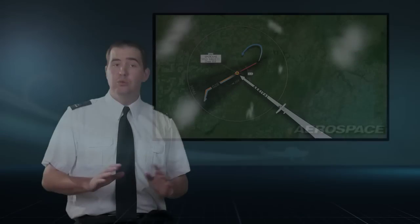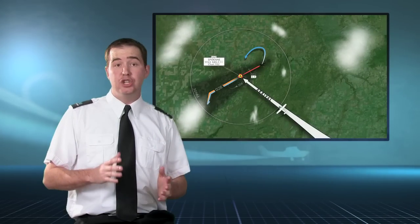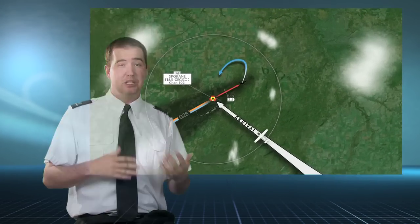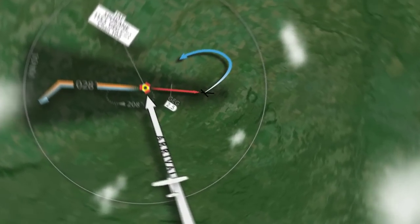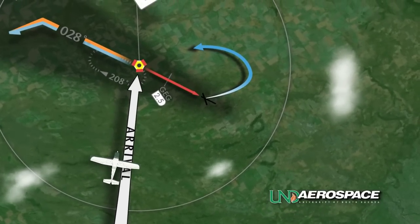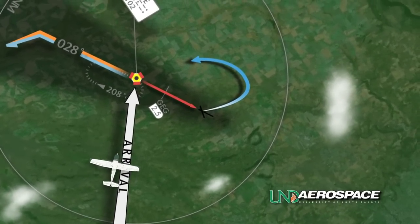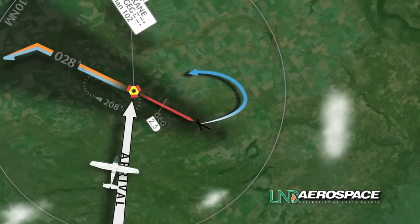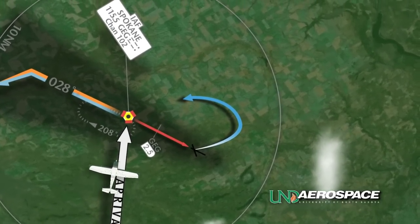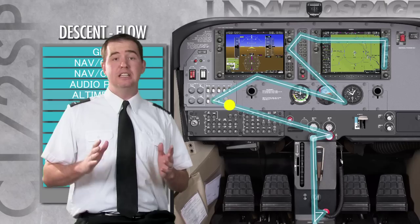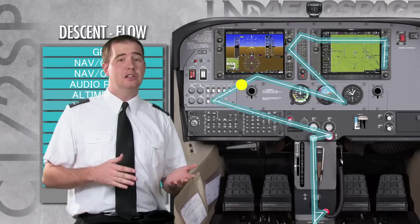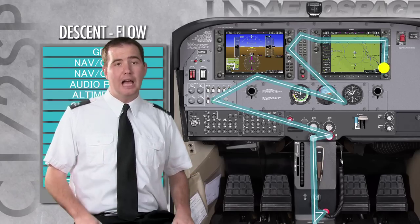Prior to arriving at the initial approach fix, or if receiving radar vectors prior to intercepting the final approach course, the pilot should complete the descent checklist. In UND's Cessna 172, this checklist includes the following items.